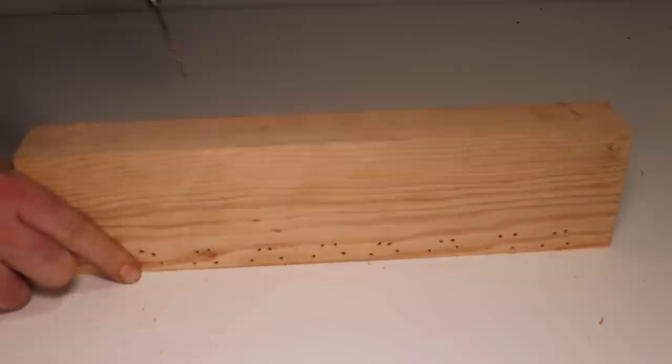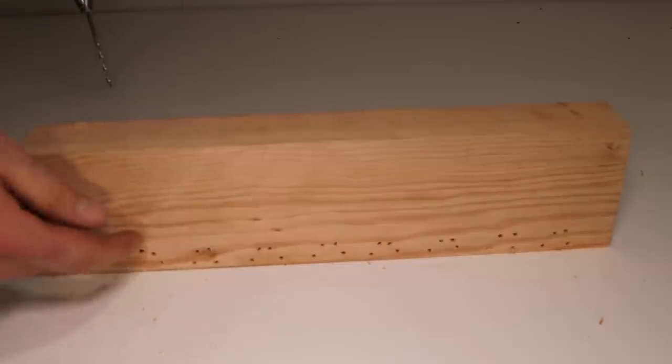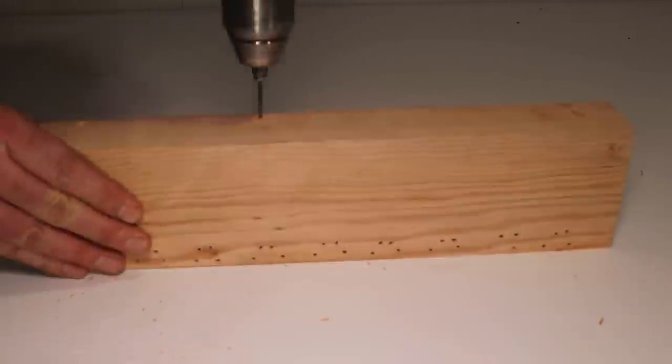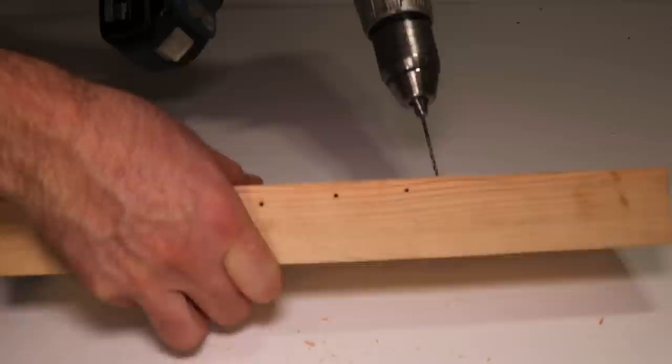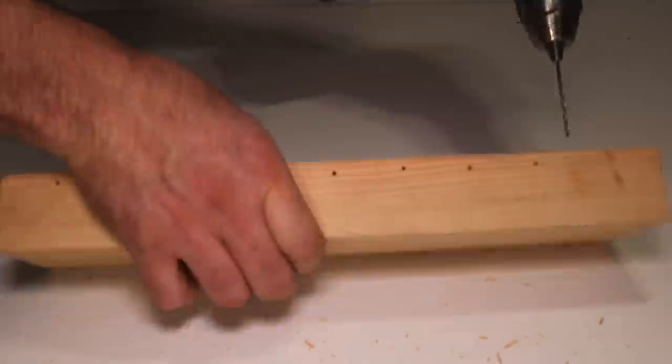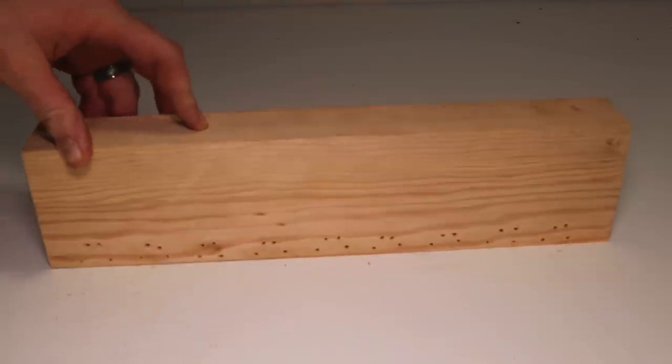The last thing I need to do is drill a pilot hole on the back for the spring. I'll just flip it around. These are just going to be directly across each hole. We're done drilling. Now we're ready to bend some wire.